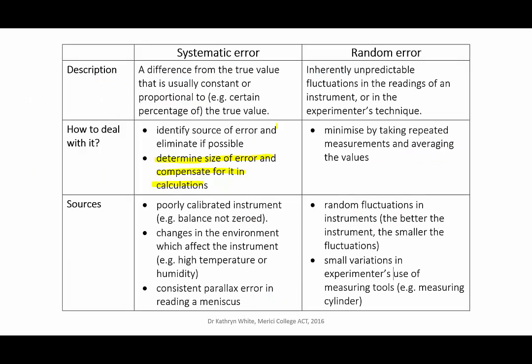In the case of the measuring cylinder, once the source of error was identified, the experimenter could improve her technique, ensuring she's always at eye level with the meniscus when she reads it, and thereby eliminate the error.